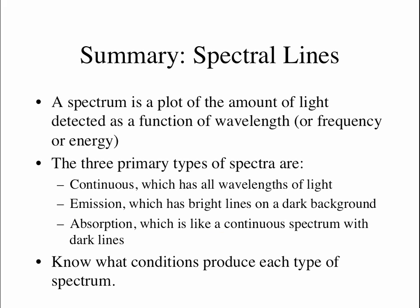Let's summarize what we know. A spectrum is a plot of the amount of light, or intensity of light, detected as a function of wavelength — or we could also plot frequency or energy since these are related to wavelength. The main types of spectra are: a continuous spectrum, which shows all wavelengths of light; an emission line spectrum, which is mostly dark with bright lines at very specific wavelengths; and an absorption line spectrum, which is like a continuous spectrum except there are dark lines at very specific wavelengths. A continuous spectrum can come from a black body. An emission line spectrum comes from energized gas. And an absorption spectrum comes when light from a black body passes through gas on its way to us. In the next mini-lecture, we will discuss exactly where these lines come from, why they occur at specific wavelengths, and why we can use these to tell what elements are present in a star.